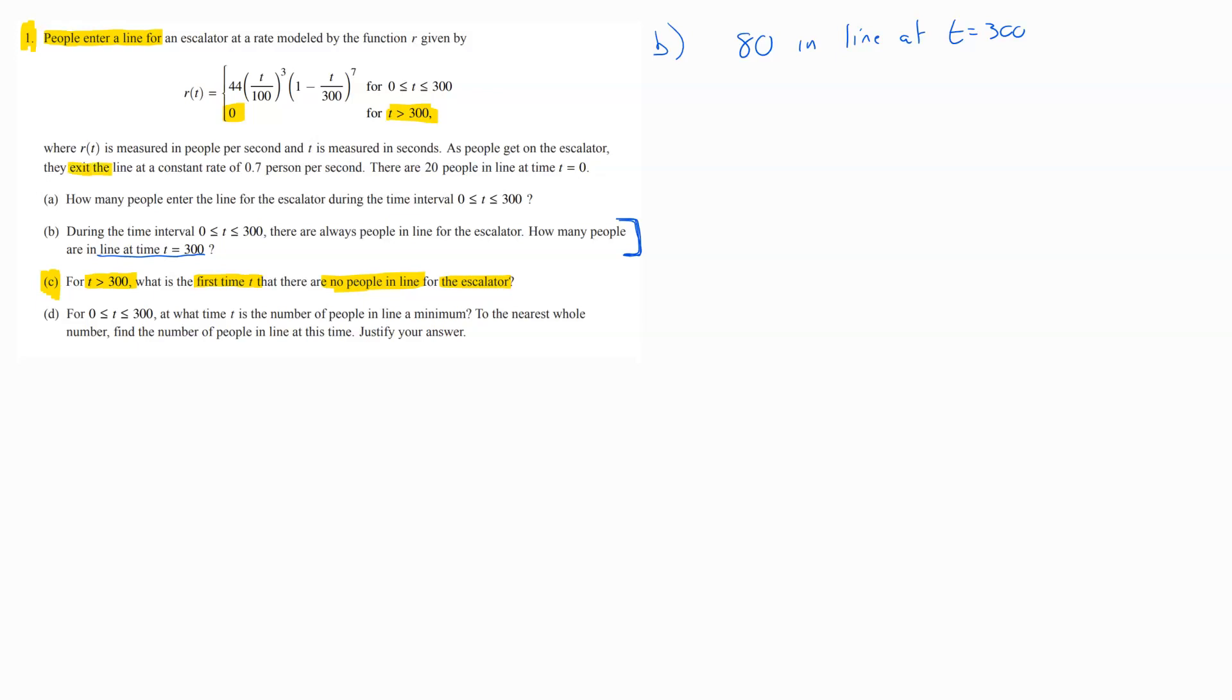And then, how many people are leaving is given by this. The people are leaving at a constant rate of 0.7.